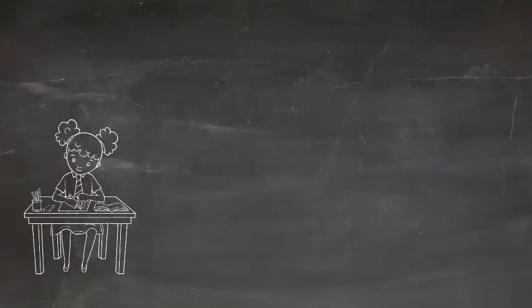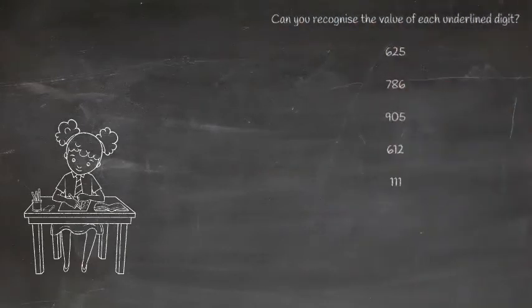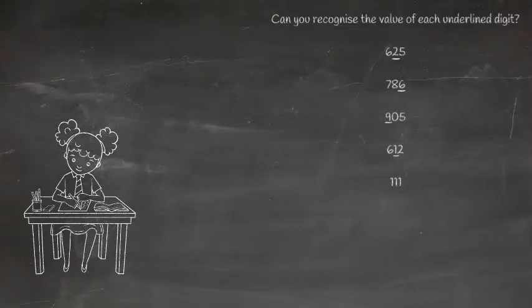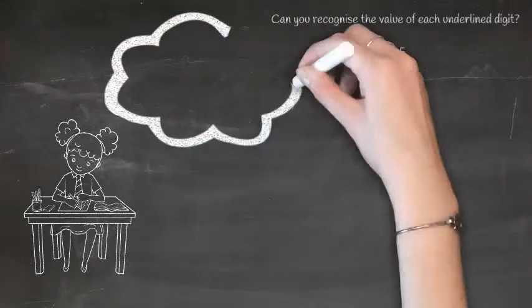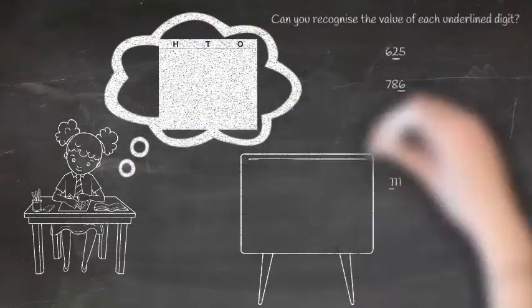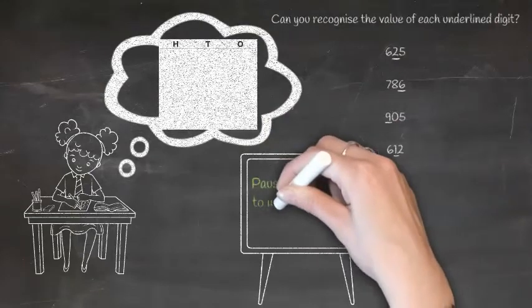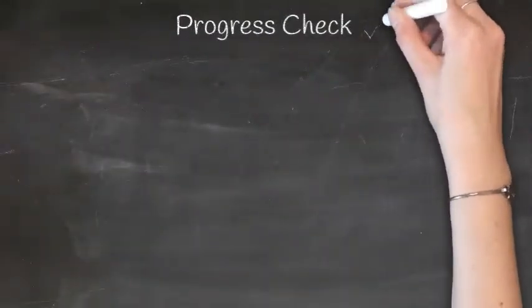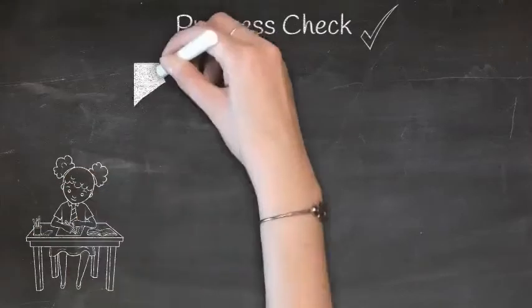I think you are ready to move on. Now, we are going to look at some numbers. Each number will have one of their digits underlined. I wonder, can you work out the underlined digit's place value? Remember, use the place value chart and pause the video here to work it out for yourself. Are you ready to check your answers?